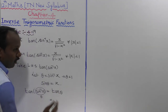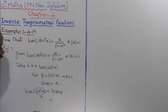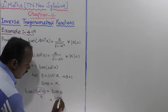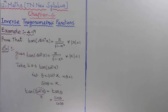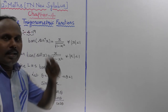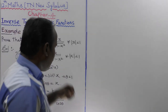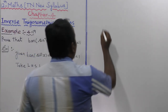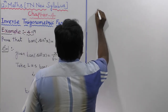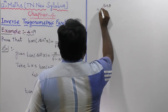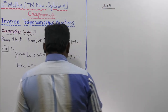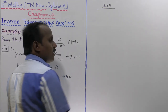Tan theta is equal to the ratio of sin theta divided by cos theta. The numerator is sin theta, divided by the denominator cos theta.